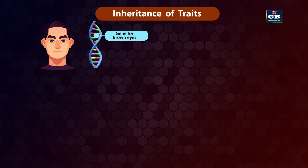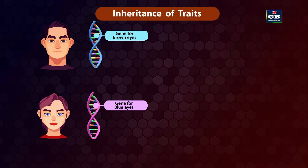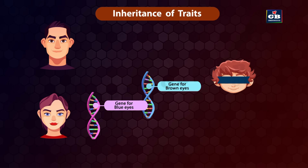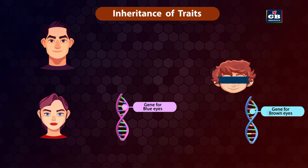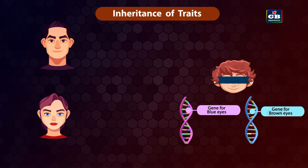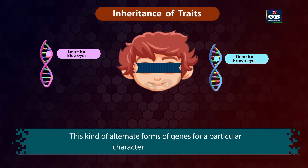Father's DNA has genes for traits like eye color and type of earlobe, and so does the mother's DNA. The offspring get two genes for each trait — one from the father and one from the mother. For example, if the father's eyes are brown and the mother's eyes are blue, the baby gets both brown and blue color genes. These alternate forms of genes for a single character are called alleles.